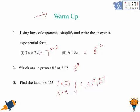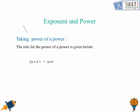Now we move ahead and we are going to learn about the first law of exponents, which is about a number raised to some power, whole raised to another power. The answer would be: the base remains the same, multiplied by both powers — so 3 times 4 which is 12. In generalized form, a to the power m, raised to the power n, equals a to the power m times n.